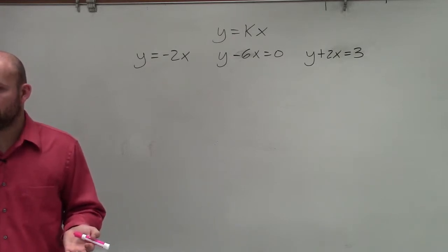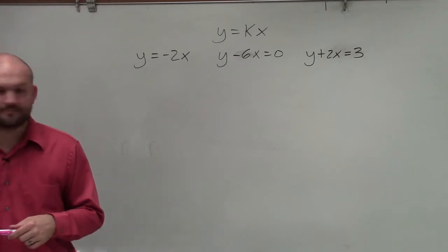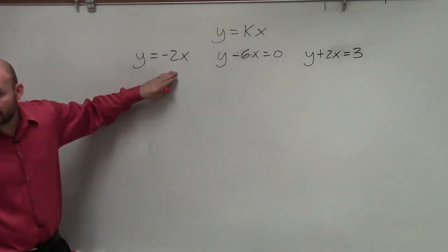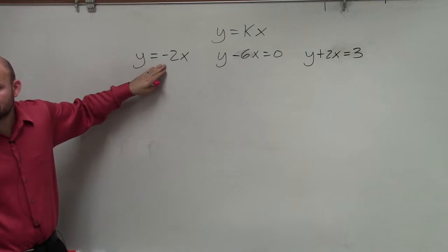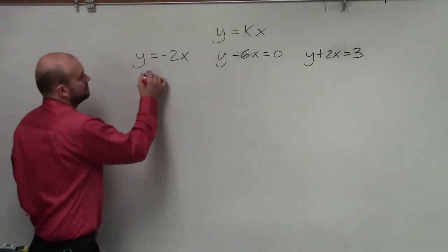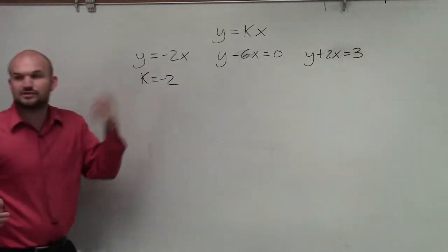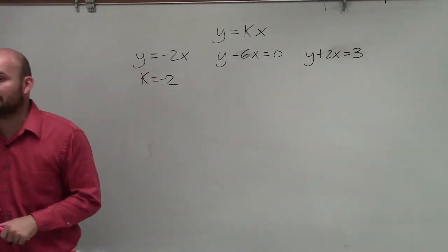2.2. We're in the second set, like number four. So if you look at this equation, is this in the form y equals kx? Yeah, and what's the value of k? Negative 2. So you'd say yes, that is direct variation. Value of k is equal to negative 2. Done.